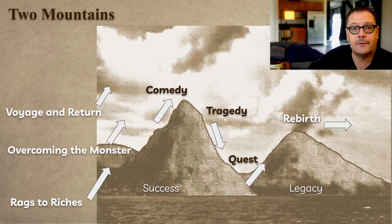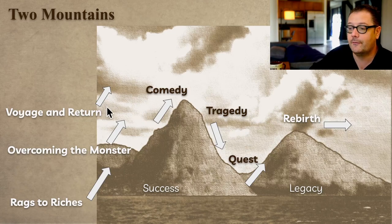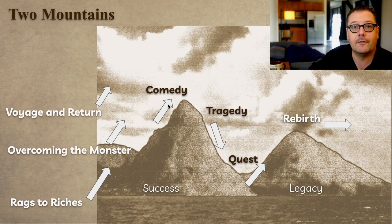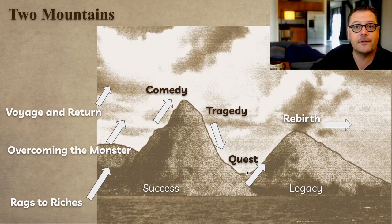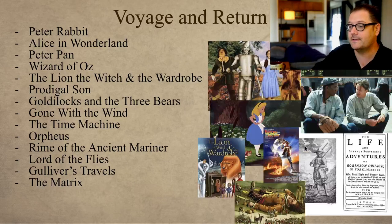By quick review, I like to plot these out on a mountain. We've been working our way up — Rags to Riches, Overcoming the Monster, Voyage and Return — and we're climbing up the ladder of success. Once we get to comedy, that's the pinnacle of the first mountain, and we'll get into tragedy, down into the quest valley and rebirth. This is encompassing an entire life cycle — that's my contention.